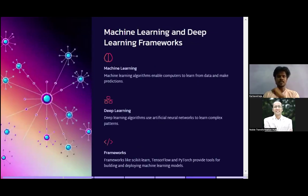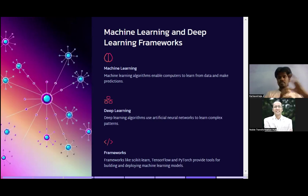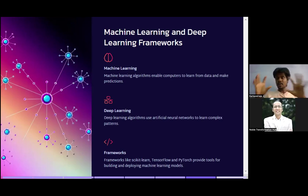Machine learning enables computers to learn from data and make predictions. For example, y = mx + c is a linear regression algorithm — a kind of machine learning. We feed data, the machine learns, and then makes predictions; we find the slope and intercept so that when x is given, y is predicted. Deep learning, on the other hand, uses artificial neural networks to learn complex patterns — when the data doesn't fit a single equation, such as image data where we need pixel-wise learning, we move to deep learning.